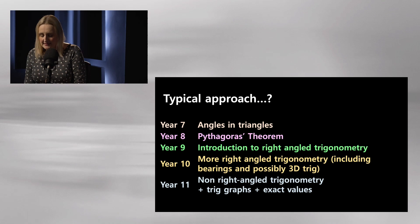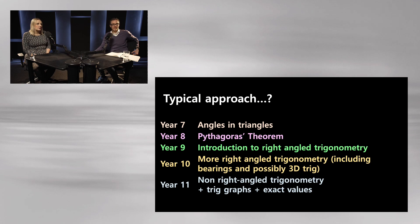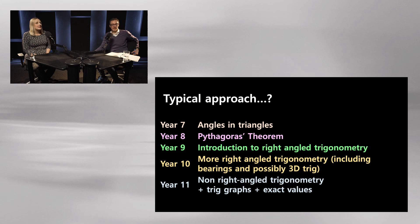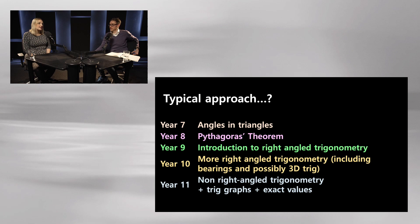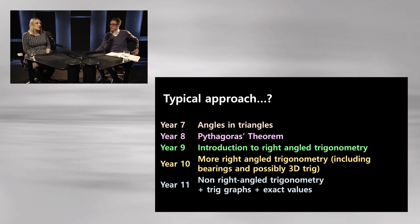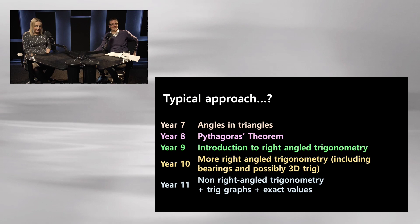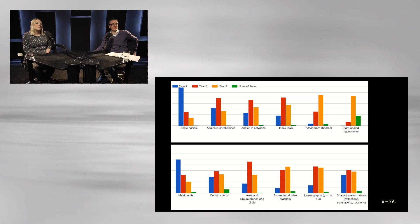Year 10 could cover more right-angle trigonometry, going into greater depth — bearings and maybe three-dimensional work. Year 11 could cover trig graphs and exact values. At my school we actually do all of that in Year 10: cosine and sine rule in Year 10, trig graphs in Year 11. We're pretty much doing all of trig in Year 10 because the beginning is a recap from Year 9.